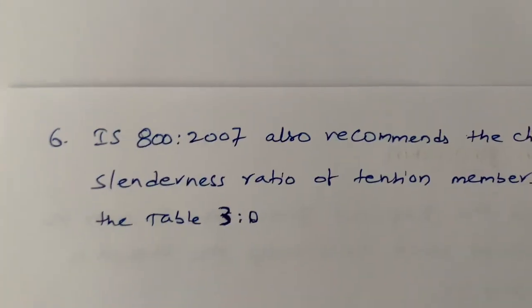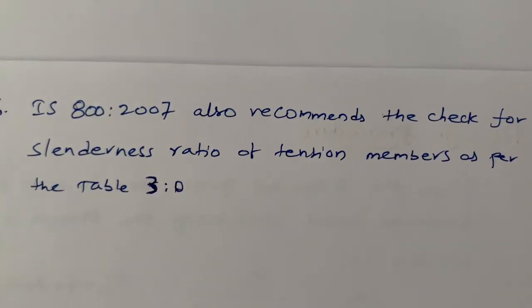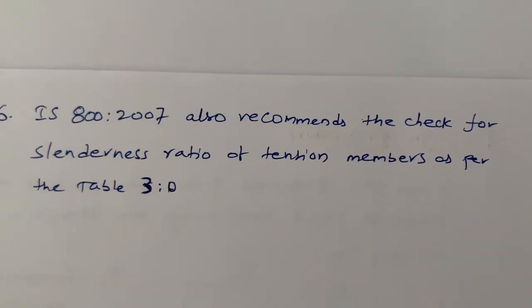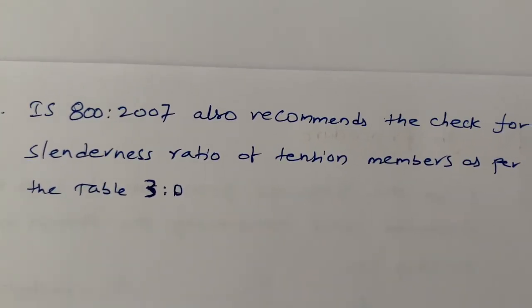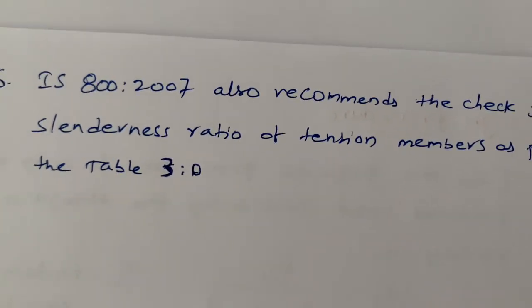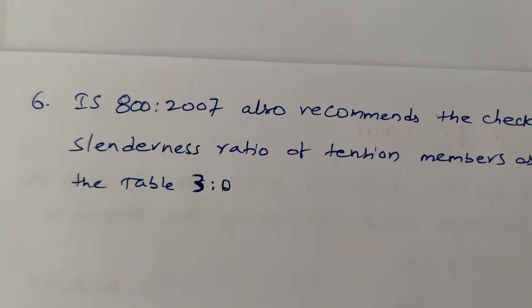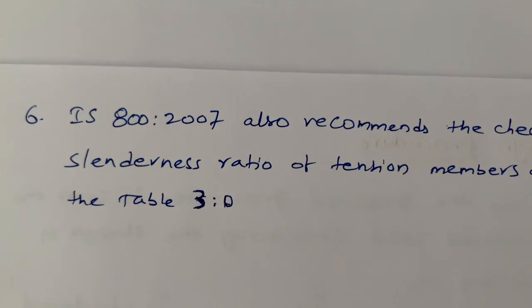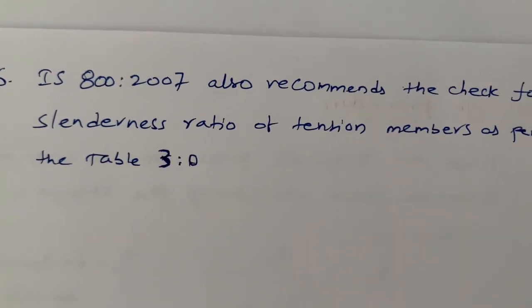The last point is that IS 800:2007 also recommends a check for the slenderness ratio of tension members as per Table 3. We need to calculate the maximum values of the effective slenderness ratio as specified in that table.